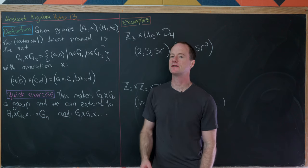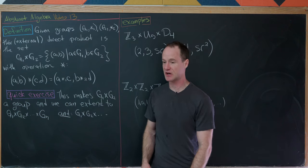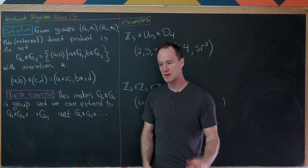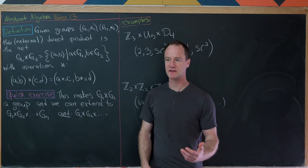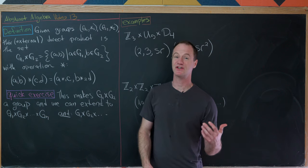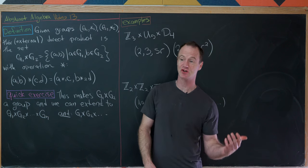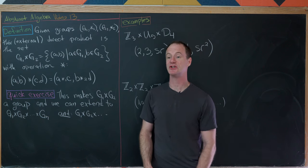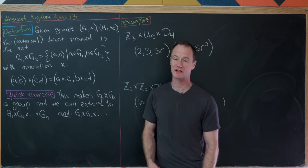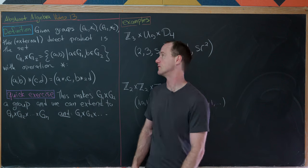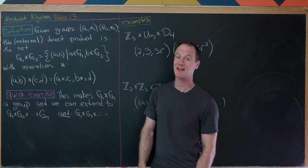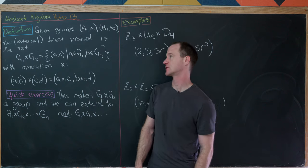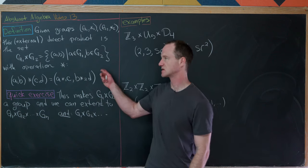This is the 13th video in a series on abstract algebra. Today we're going to talk about something called external and internal direct products of groups, starting with external direct products.